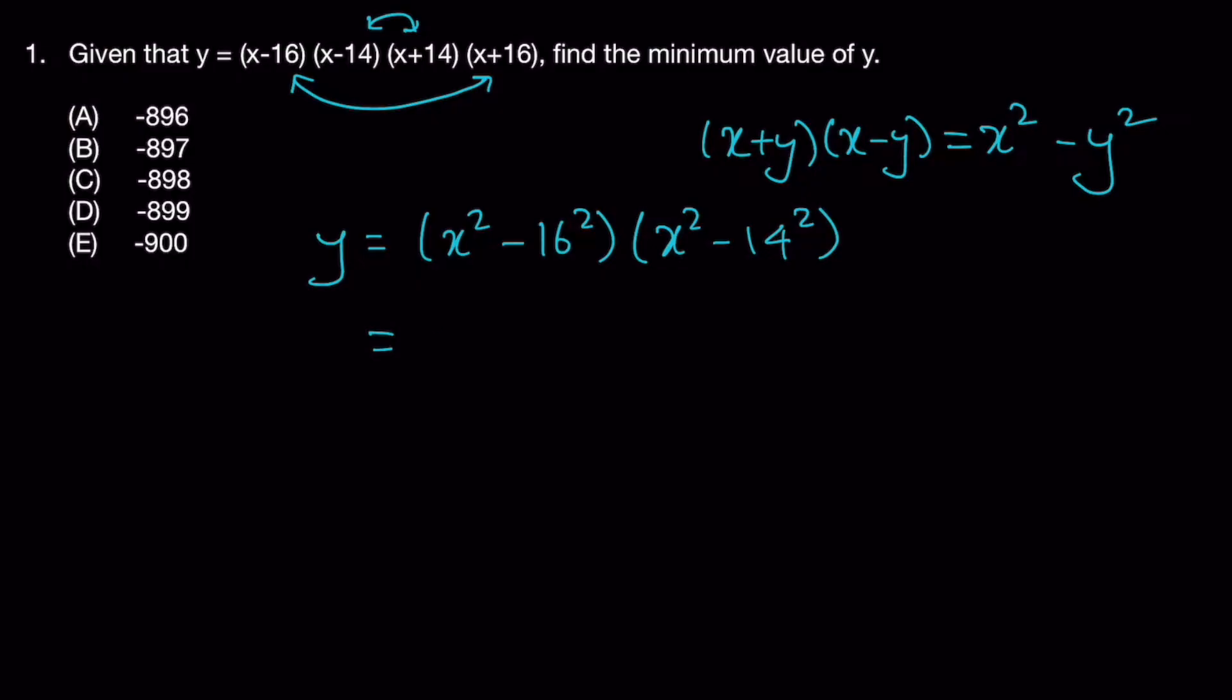Let's open up the brackets. We'll get x to the power of 4 minus 452 x squared plus 50176.